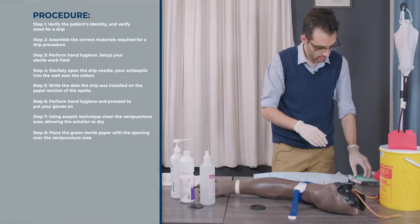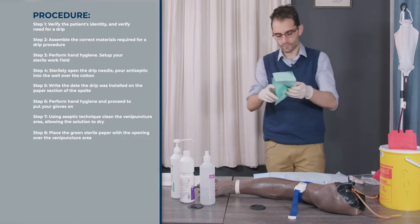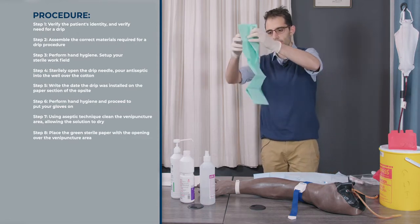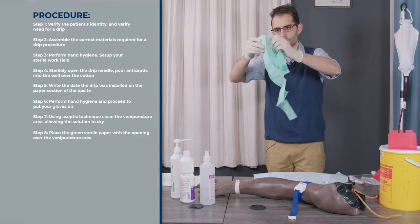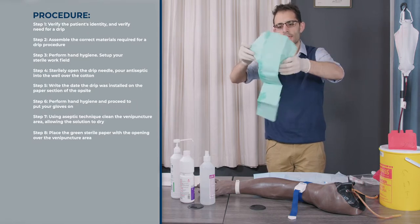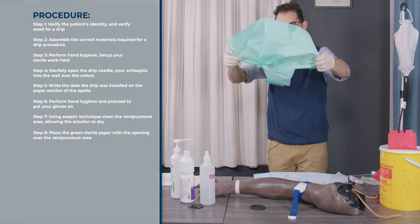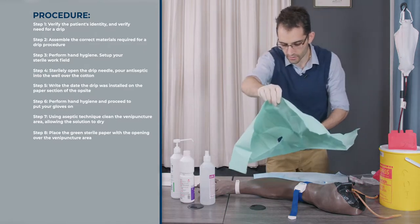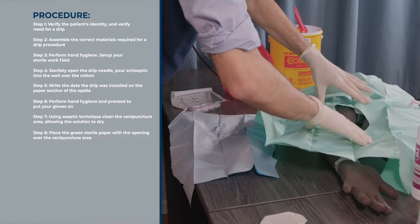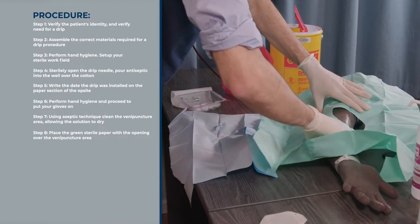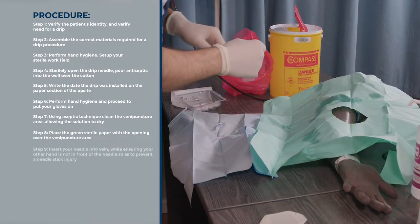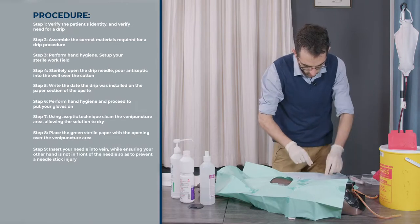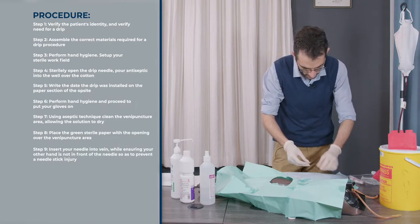You can then take your green paper and put it over the area. If you don't have a green paper, you can always put a blue paper underneath. I like the green one because it has a hole in the middle which allows you to specifically go over the vein. Then you can get the rest of your equipment ready.